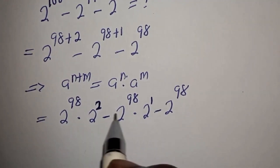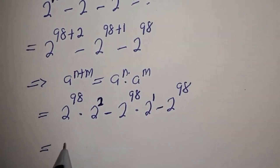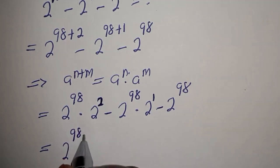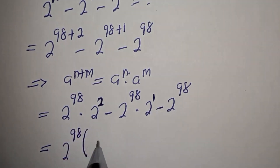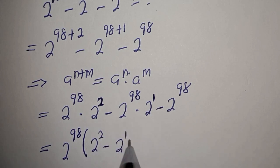From here, 2 raised to power 98 is common — let's bring it out. This gives 2 raised to power 98, bracket 2 squared minus 2 raised to power 1 minus 1.